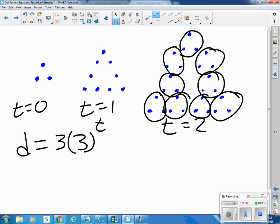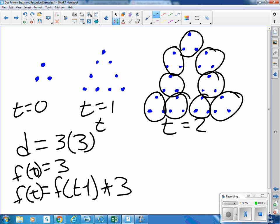And as a recursive function, we could say f of zero equals three. f of t equals f of t minus one times three. We multiply by three each time.